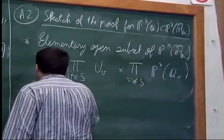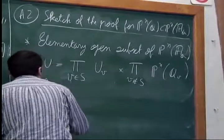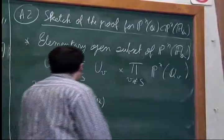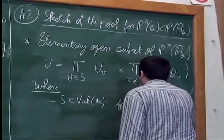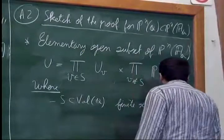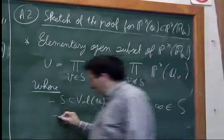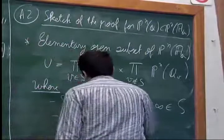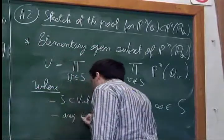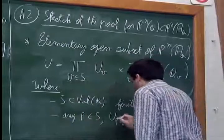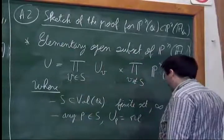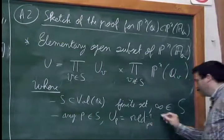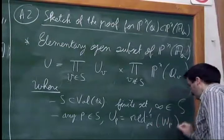The first thing I should define is a notion of elementary open subset of P^n(A_Q). For me, an elementary open subset will be an open subset U of the following form: a product for V in S of some U_v times the product for V not in S of P^n(Q_v), where S is a finite set of places including the Archimedean place.